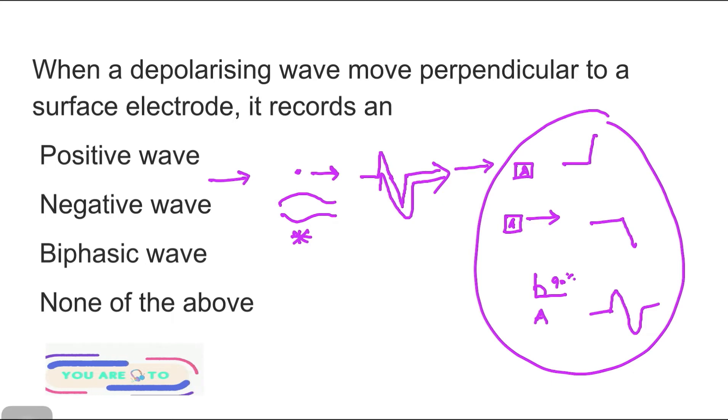But you have to remember this basic concept. When current moves towards an electrode, it will have a positive deflection. When the current moves away from the electrode, it will have a negative deflection. And when the current is perpendicular, I mean a depolarization wave is perpendicular to a surface electrode, then there will be a biphasic wave which is produced.